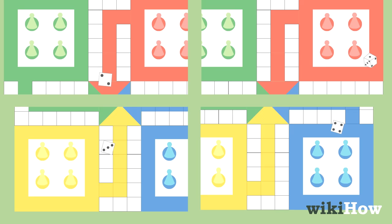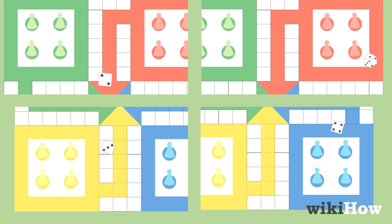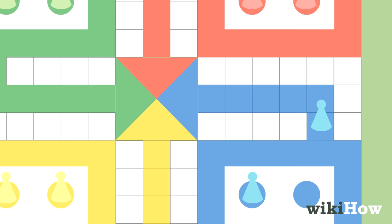Going clockwise, each player takes turns rolling the dice once per turn until they roll a six. Once a player rolls a six, they may place one of their tokens on the starting position in the marked square on the leftmost column where their color starts.